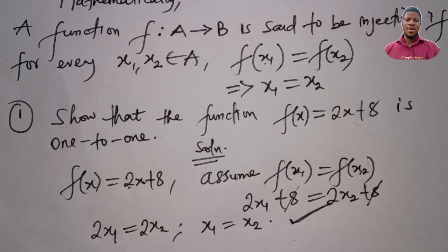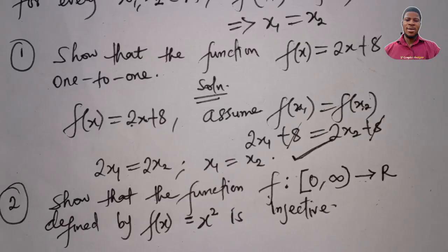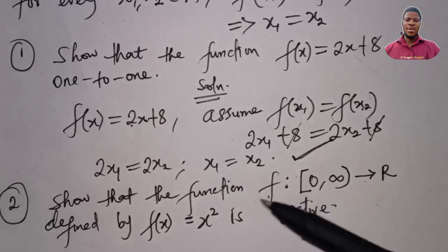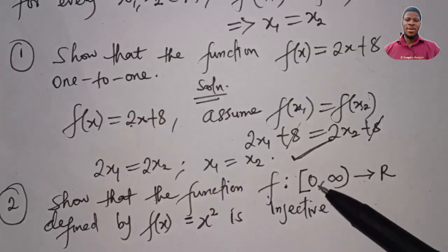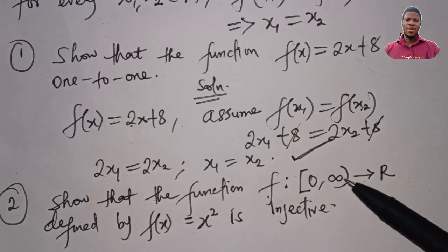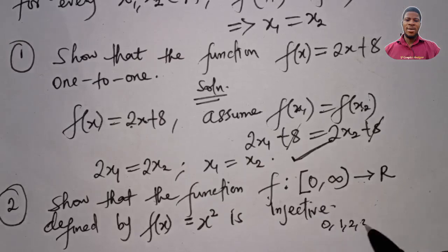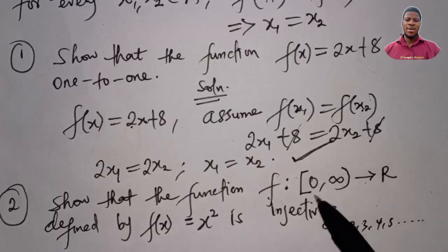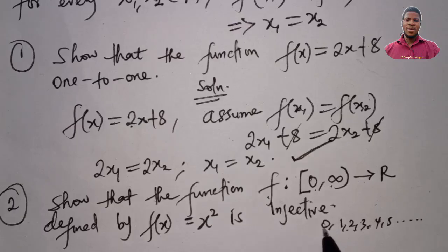Let's take another example: show that the function f(x) = x² is injective, where the domain is the set of non-negative integers from 0 to positive infinity. Negative numbers are excluded from this domain, so we're considering numbers such as 0, 1, 2, 3, 4, 5, and so on.